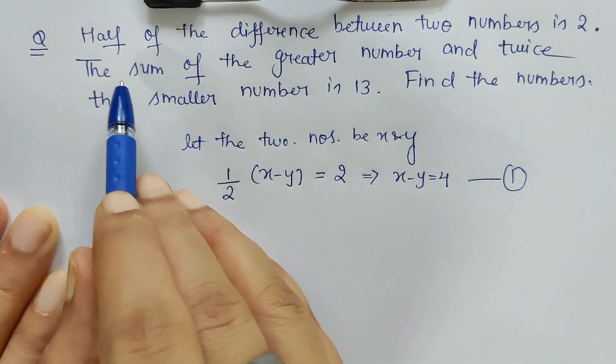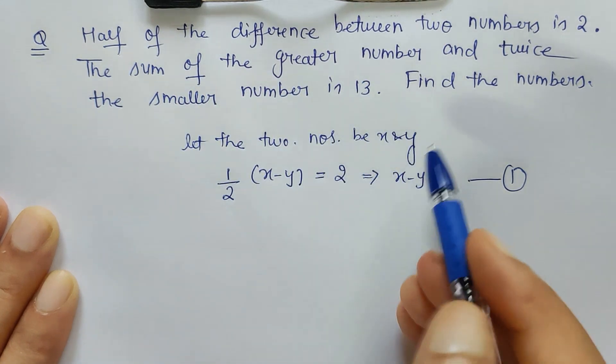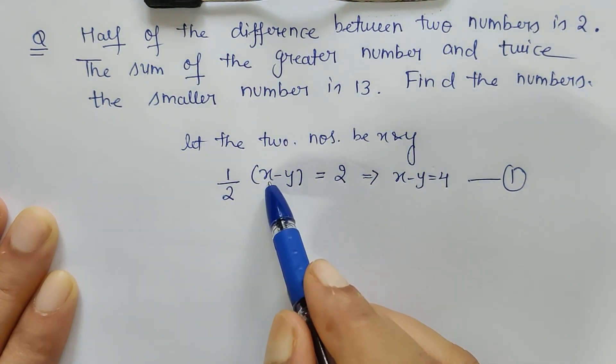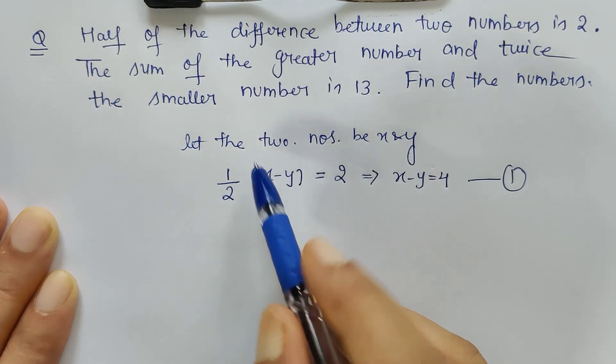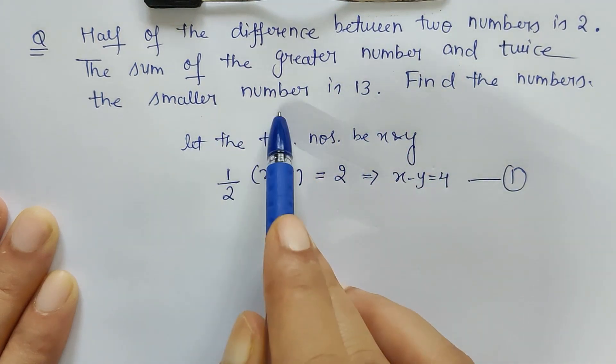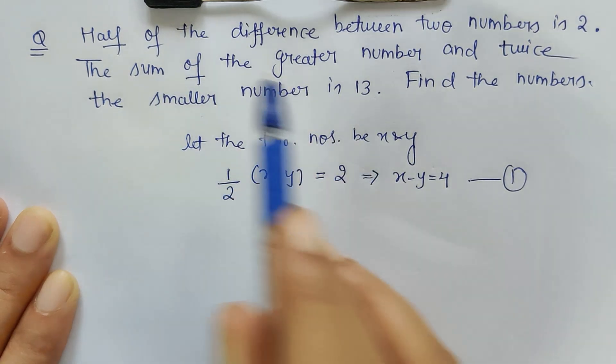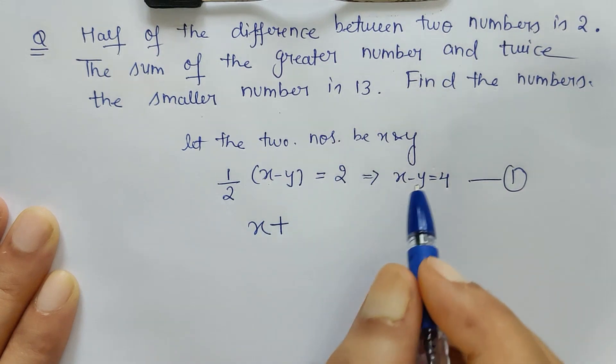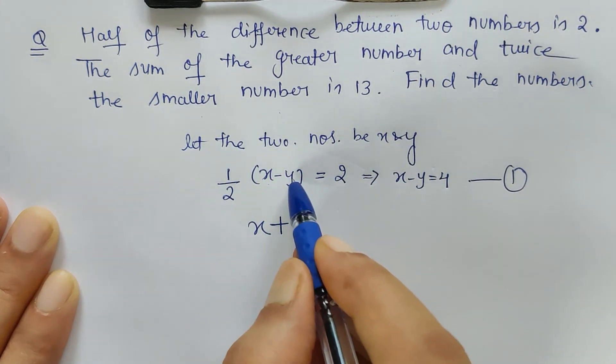Now let's read the next line. The sum of the greater number, so in this case we have assumed x is to be greater, right? Because we are subtracting y from x, so x has to be the greater number. So what is given? The sum of the greater number and twice the smaller number is 13.